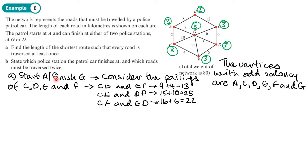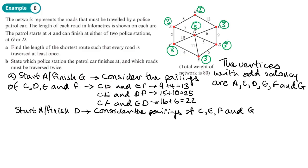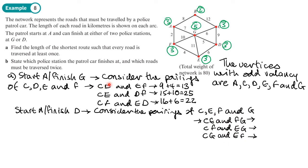Now we need to consider starting at A and finishing at D, and what those pairings are going to be. That will be the pairings of C, E, F, and G. These are the three sets of pairings - we'll work out their minimum weights. Note there's a mistake in the book where it says 9; it should be 10. The pairing with the minimum weight here is 10.